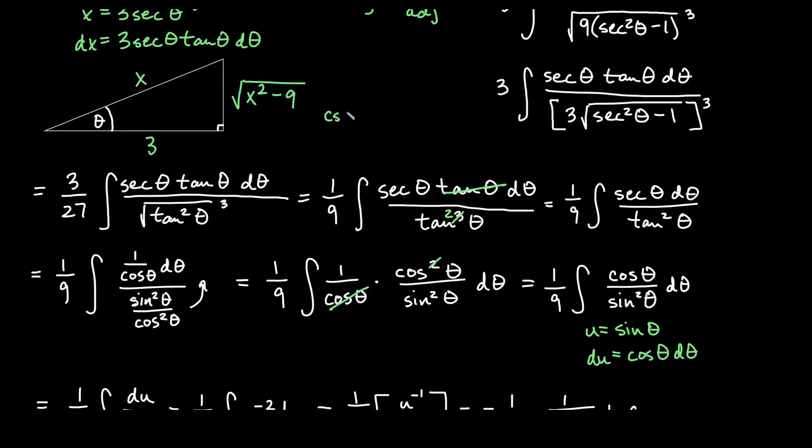So remember that cosecant is the reciprocal of sine. Sine is opposite over hypotenuse, so cosecant is hypotenuse over opposite. So hypotenuse is going to be the x and the opposite is going to be the side that is the root. So we'll get x over square root x squared minus 9 for our cosecant, and we'll go ahead and drop that down below where we need it.